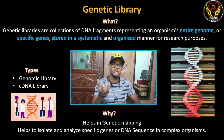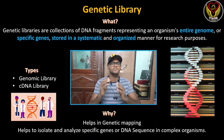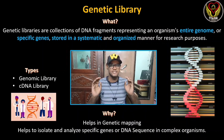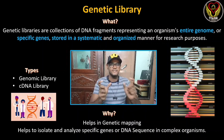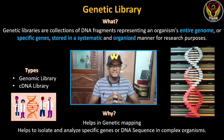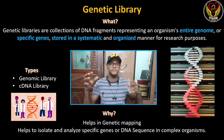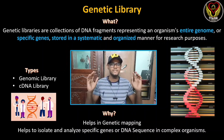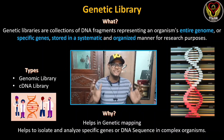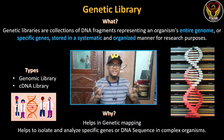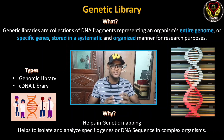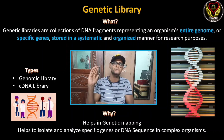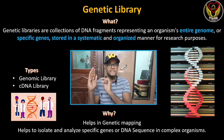In a simple organism — like a bacterium or a virus — there are fewer genes, so it is easy to identify which genes are missing. But if we are dealing with humans, there are 20,000 to 30,000 genes — or even 50,000 to 80,000. So we can analyze the genes using the genetic library.